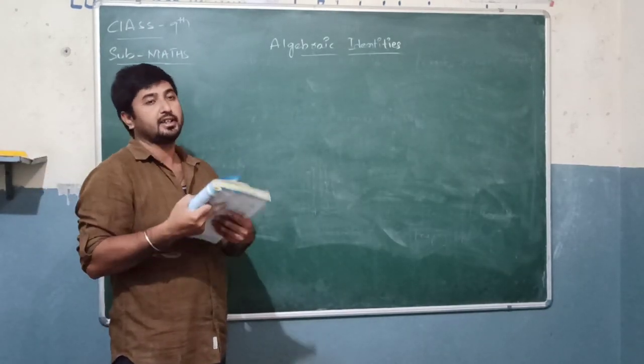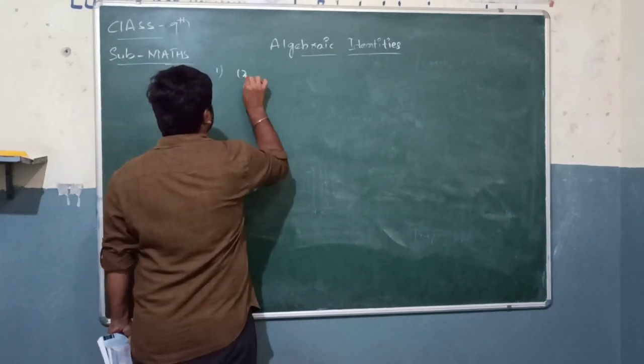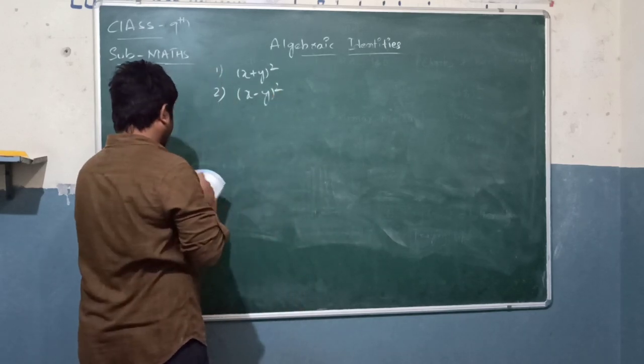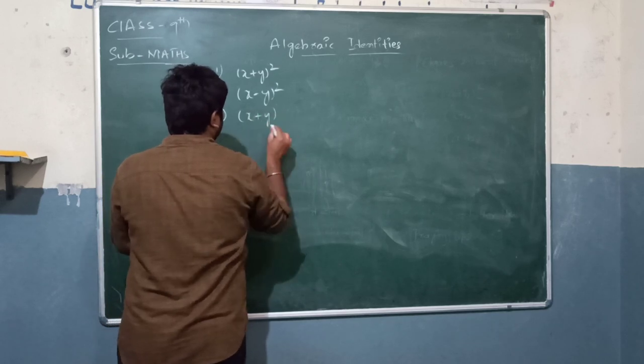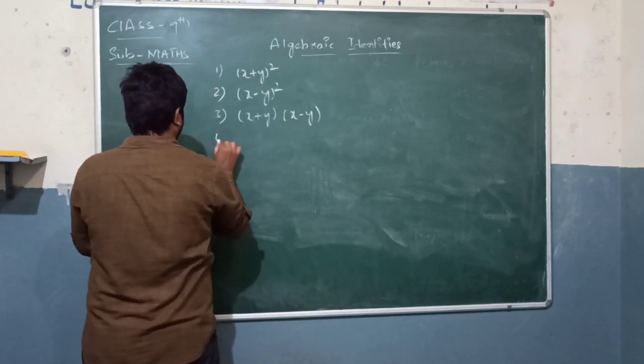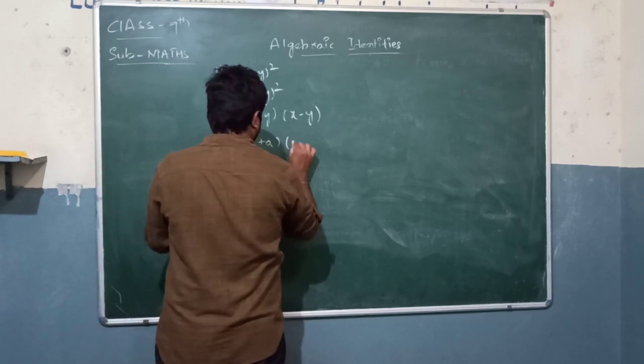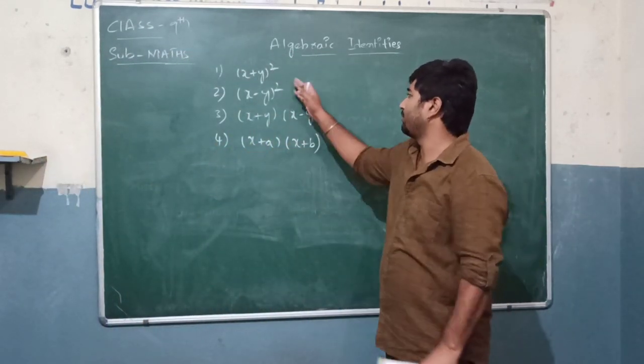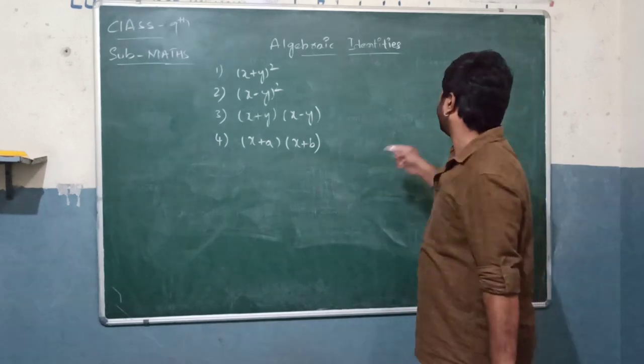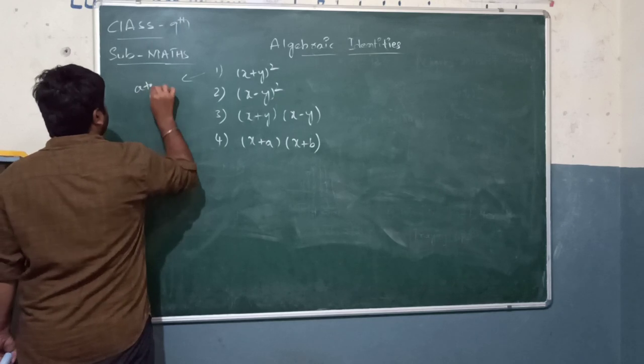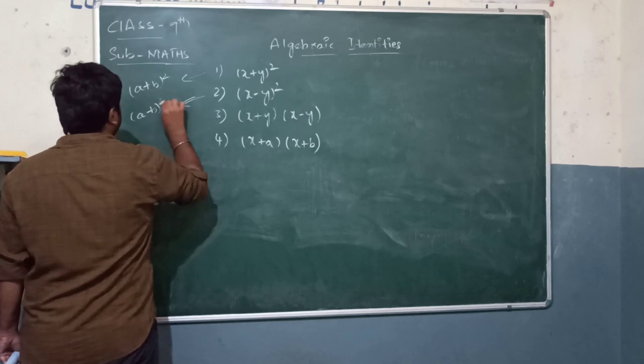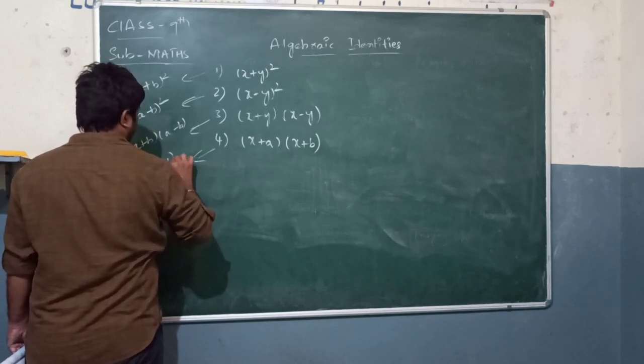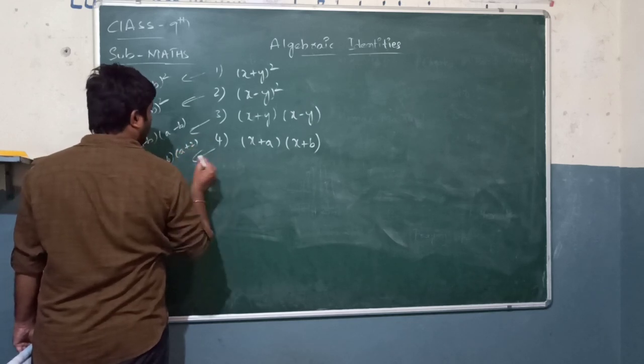We have just 4 kinds of identities. Number 1: x plus y power square. Number 2: x minus y power square. Next: x plus y into x minus y. Fourth one is x plus a into x plus b. These are the 4 kinds of identities.